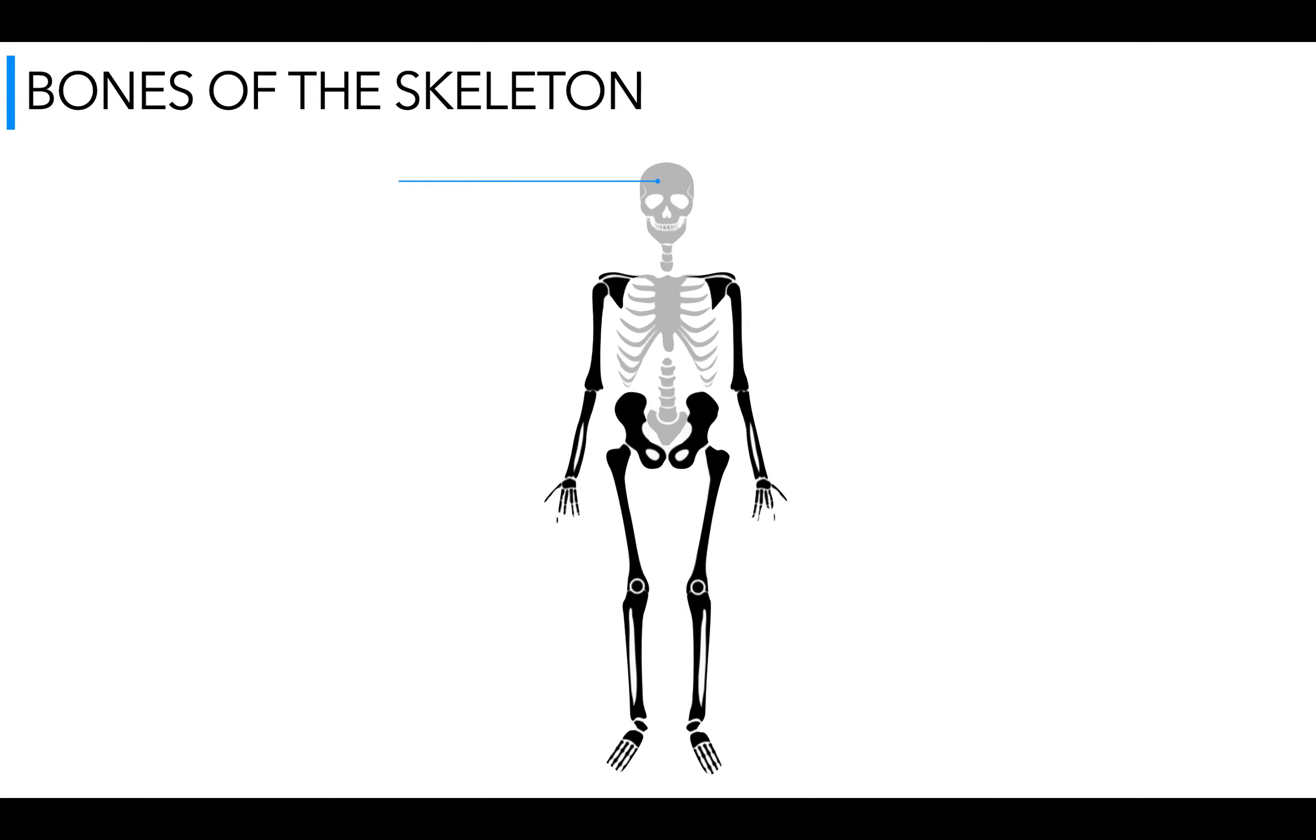Let's start simple. We have the cranium otherwise known as the skull, as we've already established it protects the brain. Here we have the clavicle also known as the collarbone, one of the bones that make up the shoulder girdle along with the scapula.